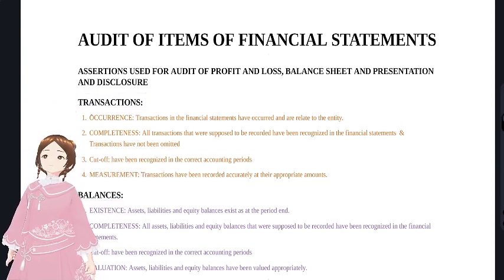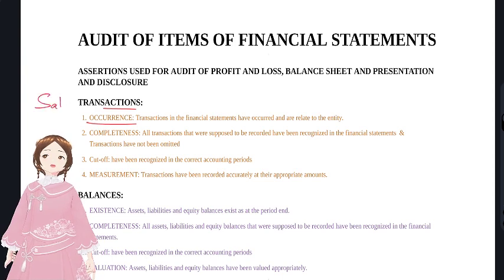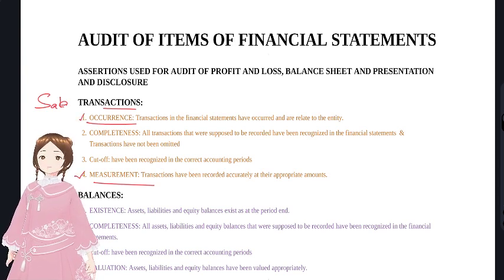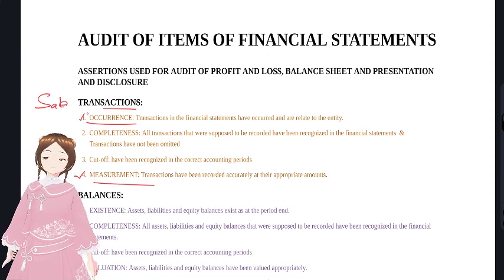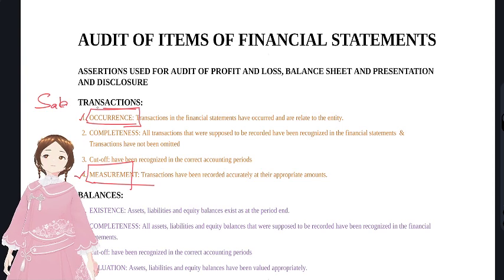A transaction is mostly an action - like a sale transaction where an action has occurred. The two key assertions for transactions are: occurrence - whether that sale transaction actually happened - and measurement, relating to things like inventory measurement or selling price. These are the terms ICAI uses in its Standards on Auditing.